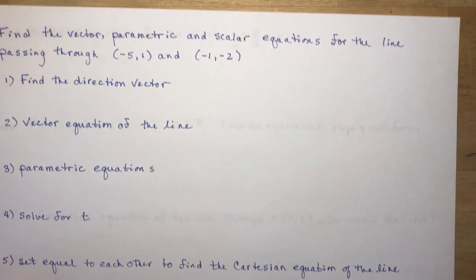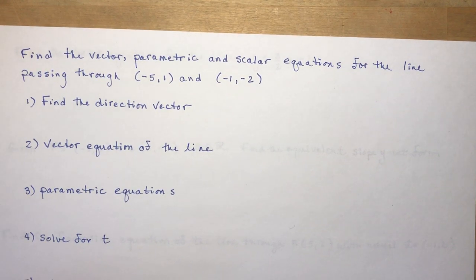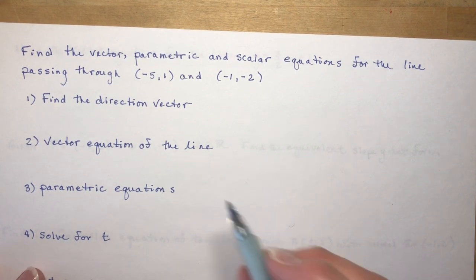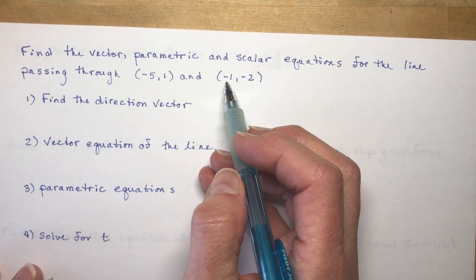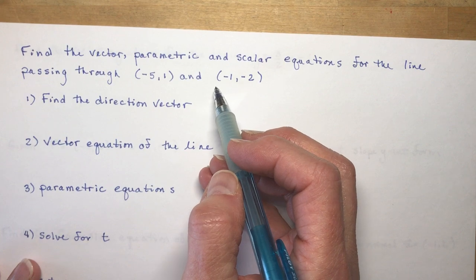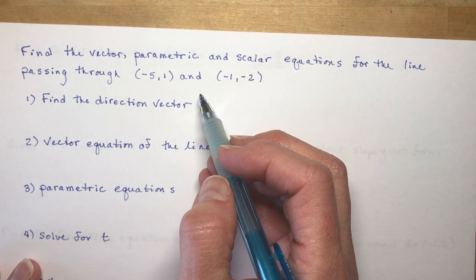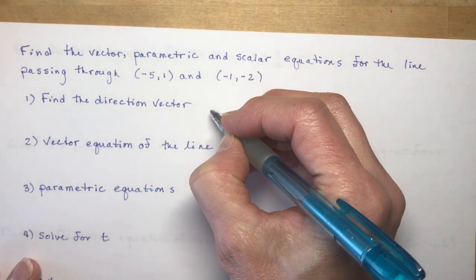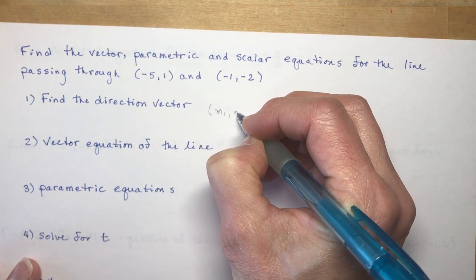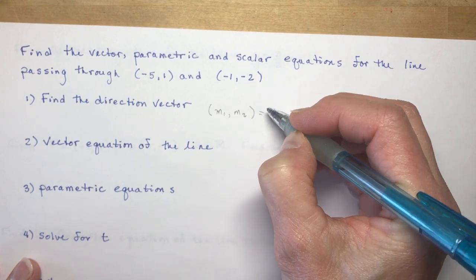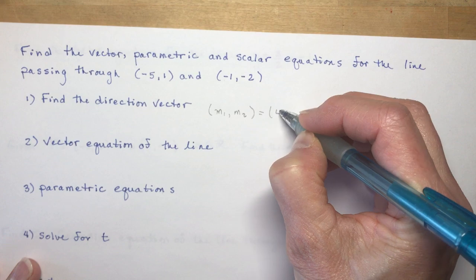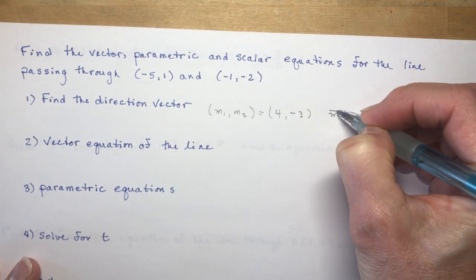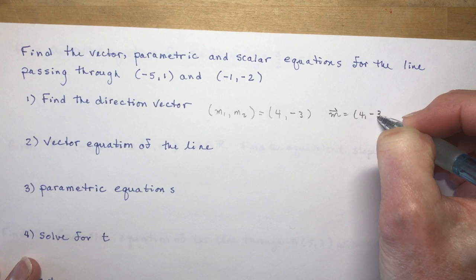Next example: find the vector, parametric, and scalar equations for the line passing through (-5, 1) and (-1, -2). First we need a direction vector. Just like in grade 9 finding slope from two points, here we subtract the vectors: direction vector m equals (-1 minus (-5), -2 minus 1) which gives (4, -3). So the direction vector is (4, -3).